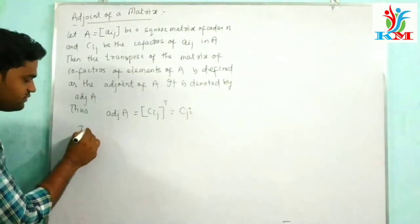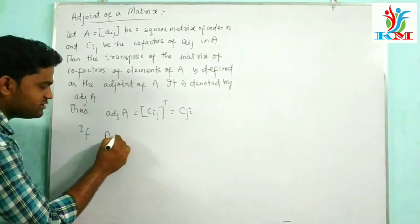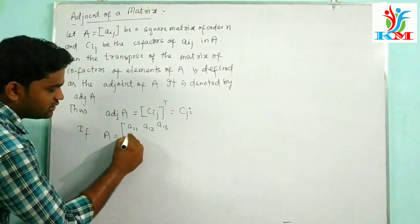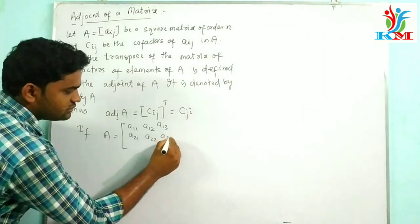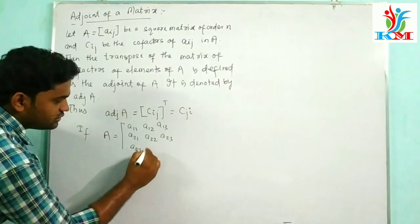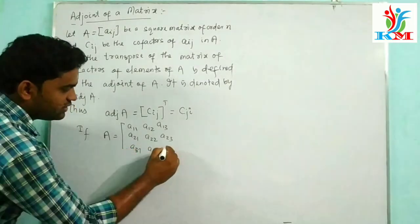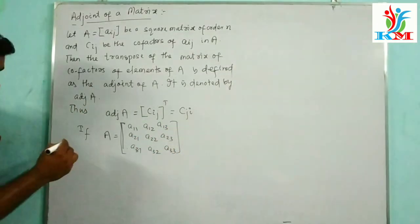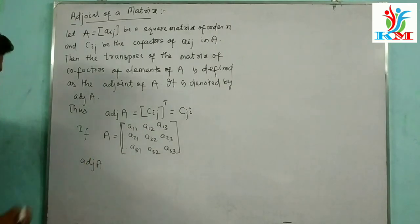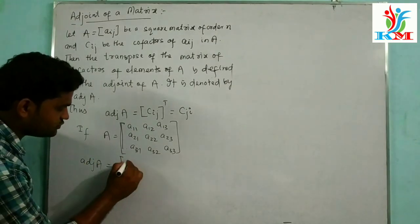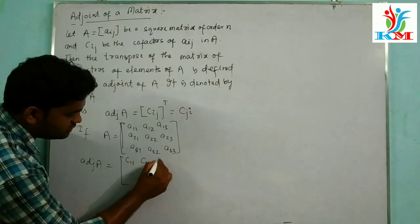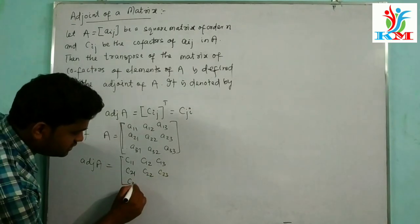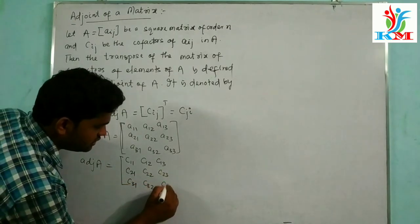For example, if A is a 3×3 square matrix having elements A11, A12, A13, A21, A22, A23, A31, A32, A33, then adjoint of A is equal to the transpose of the cofactor matrix C11, C12, C13, C21, C22, C23, C31, C32, C33.